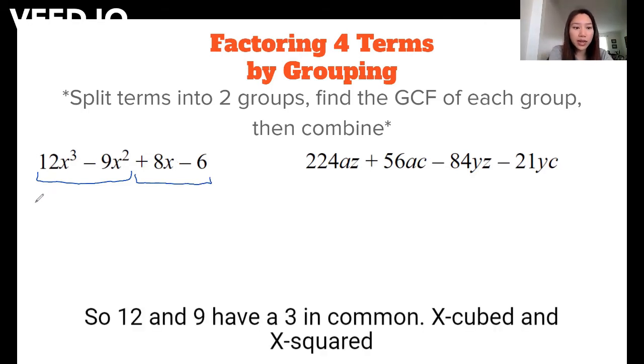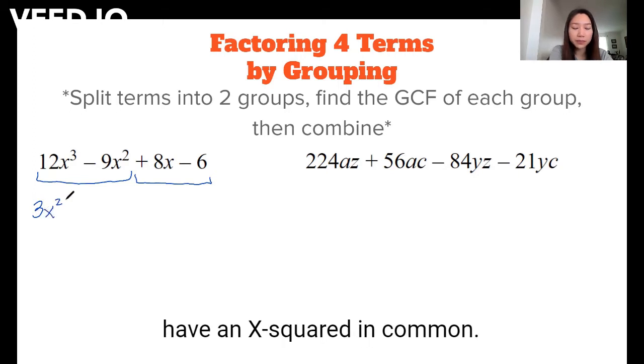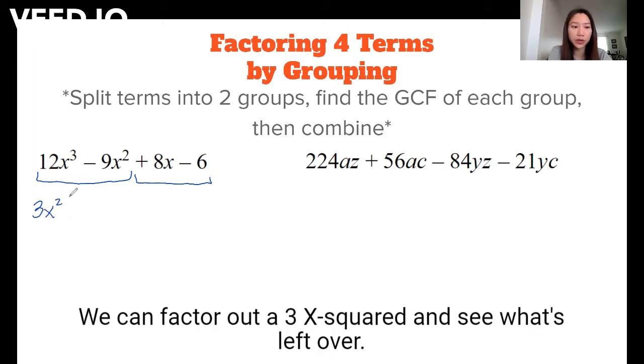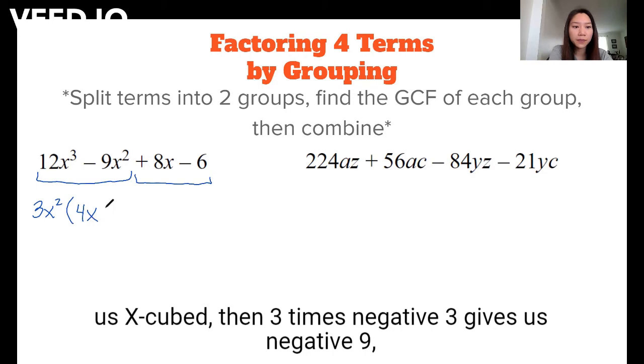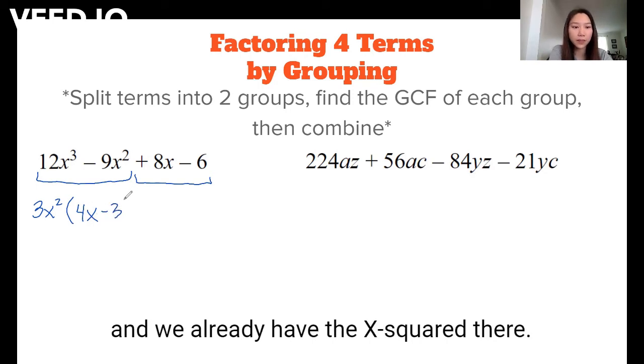So 12 and 9 have a 3 in common, x³ and x² have an x² in common. We can factor out a 3x² and see what's left over. Well, 3 times 4 gives us 12, and x² times x gives us x³. Then 3 times negative 3 gives us negative 9, and we already have the x² there.